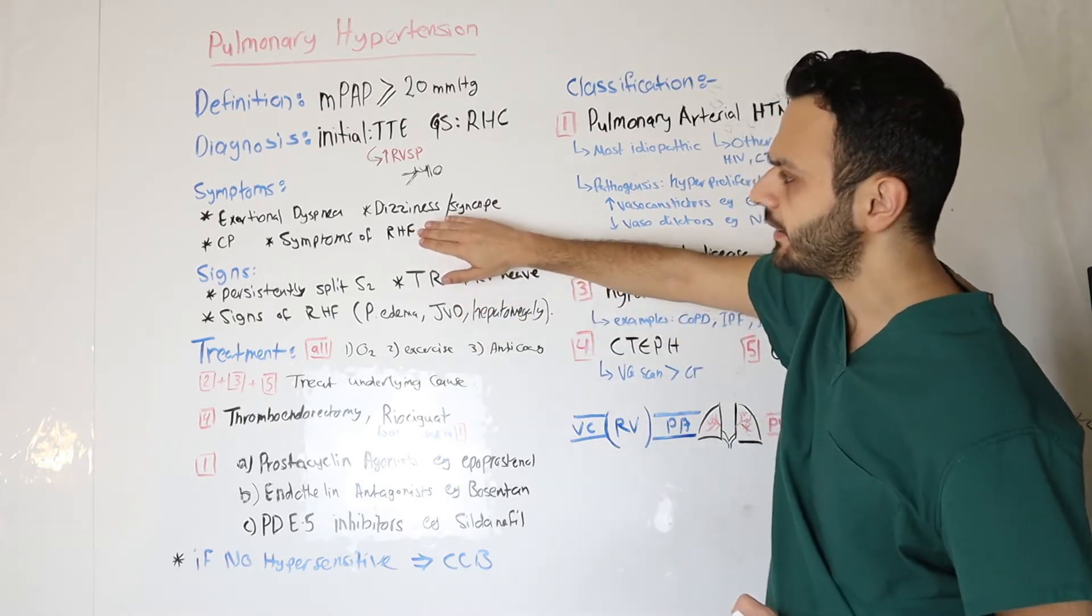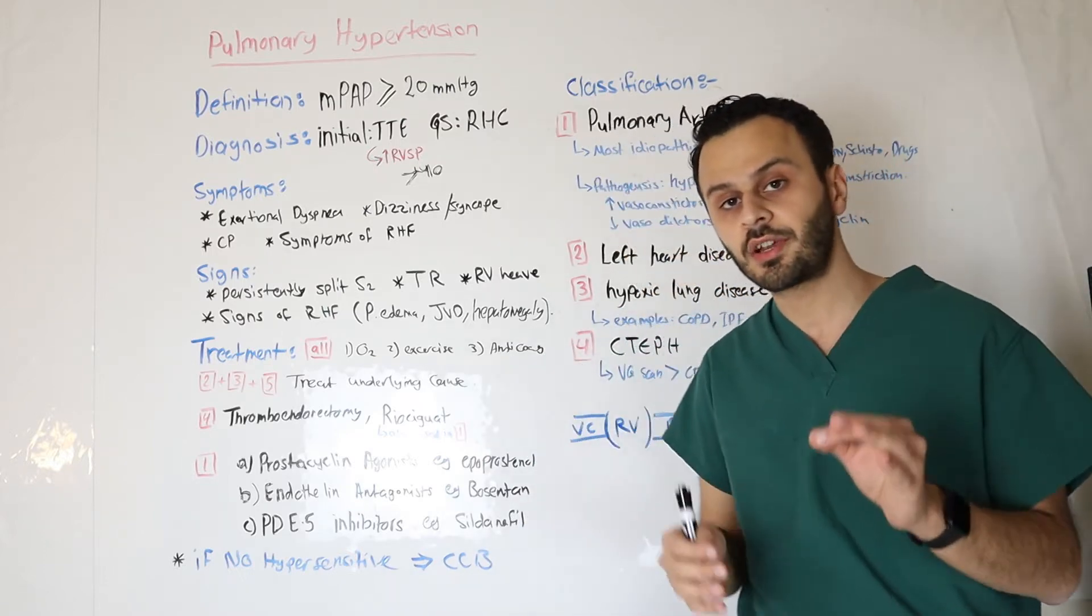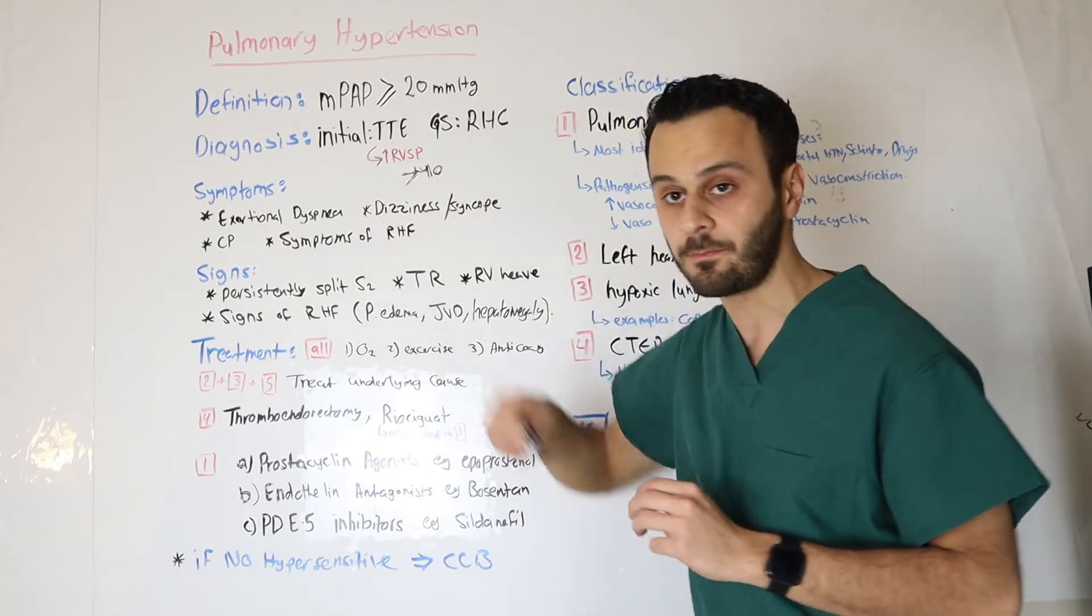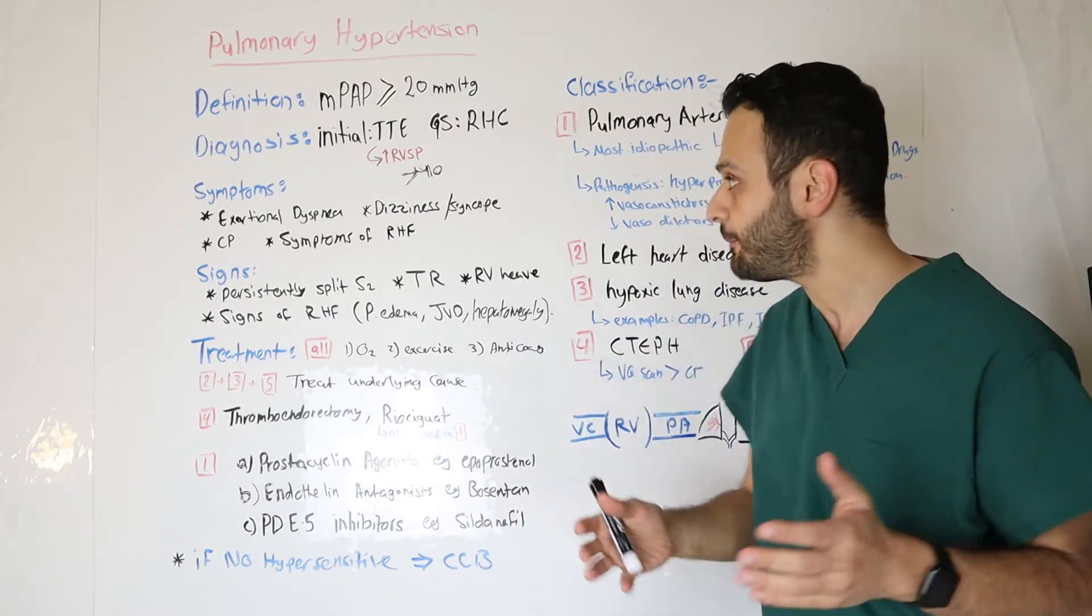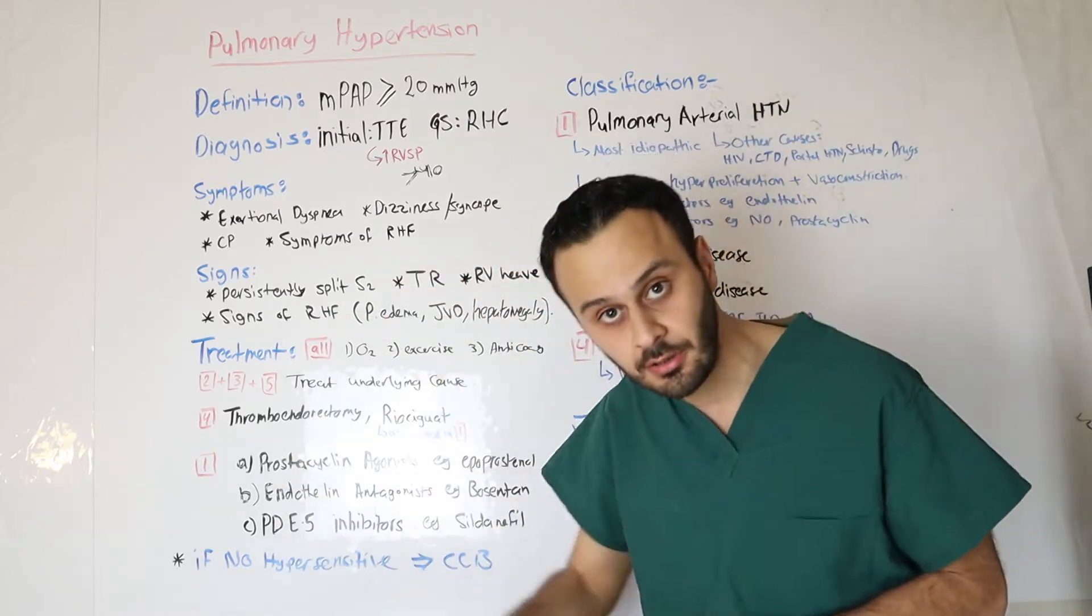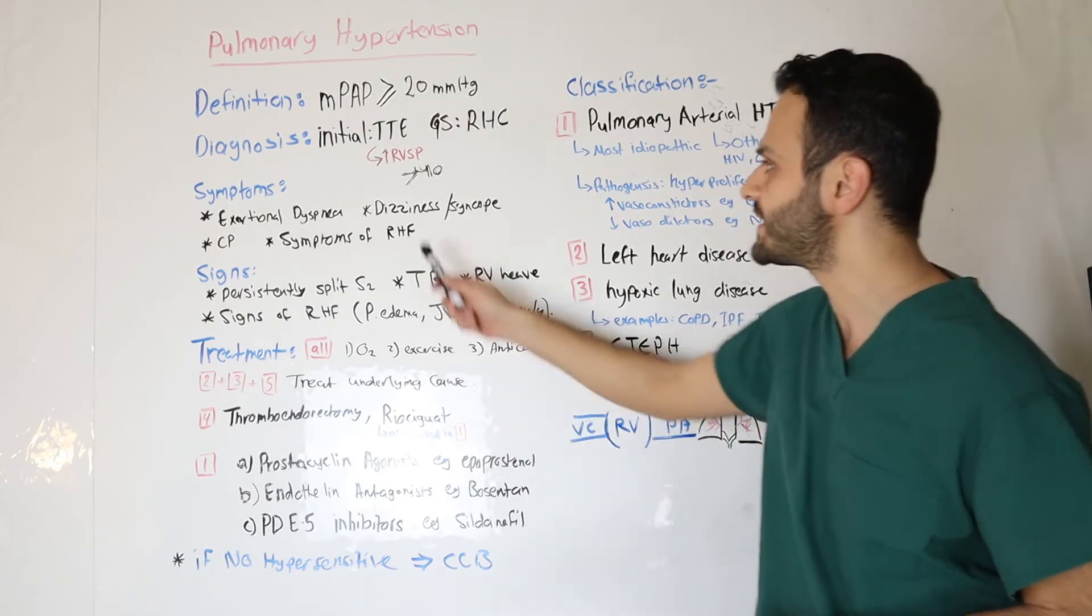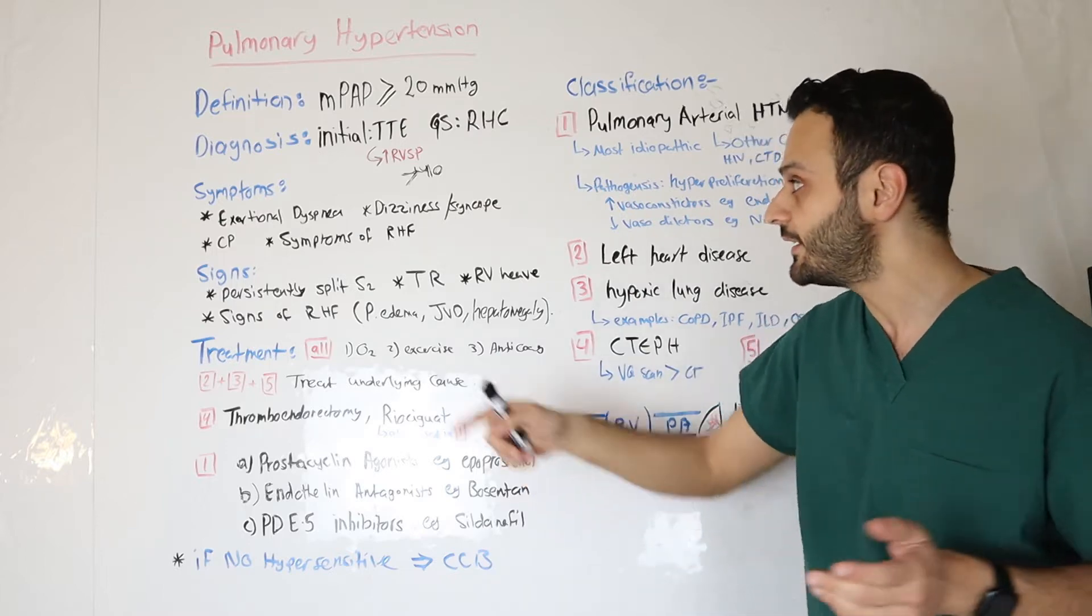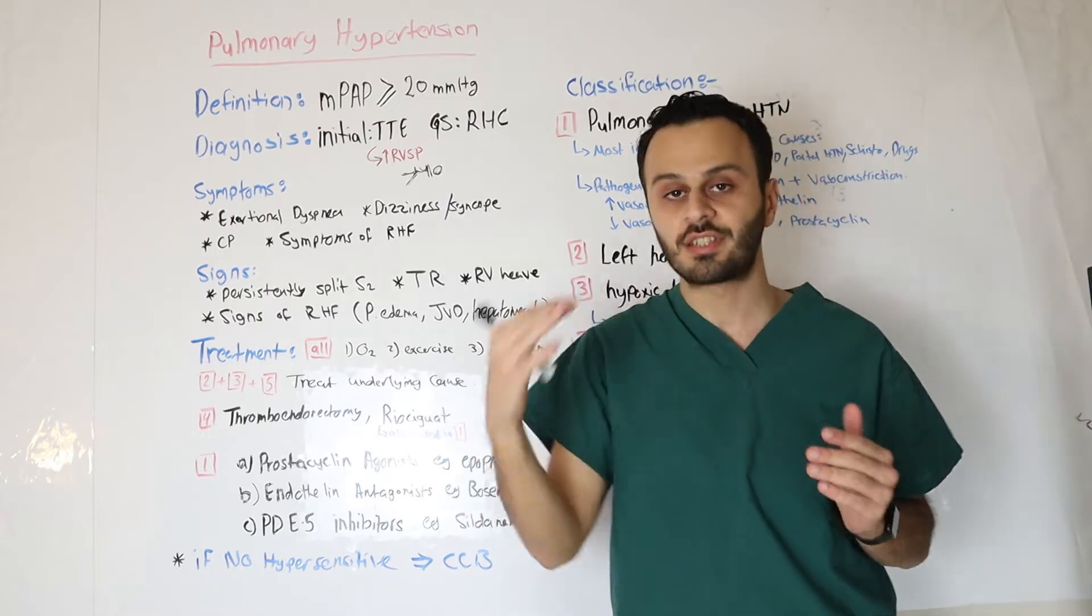Now once you get a patient with such signs and symptoms, and you suspect pulmonary hypertension, you have to remember that the first test you always order is transthoracic echo. Because it's an easy test to get, and it's very cheap. Through the transthoracic echo, you'll get a picture of what the right ventricle looks like, if there is right heart strain or not. You'll also get this number, which is the right ventricular systolic pressure. If that is elevated, by elevated I mean if it's above 40, that should increase your suspicion that the patient has pulmonary hypertension.